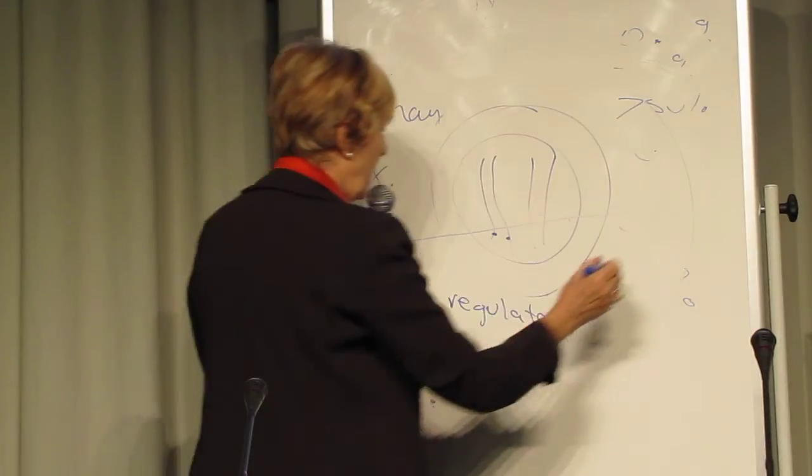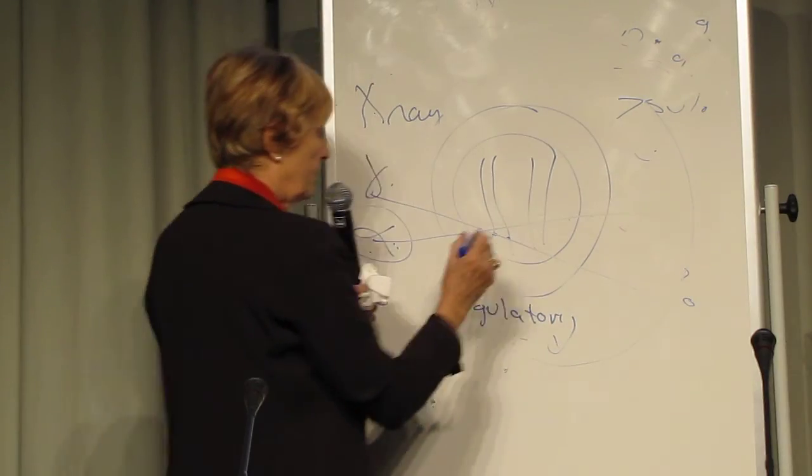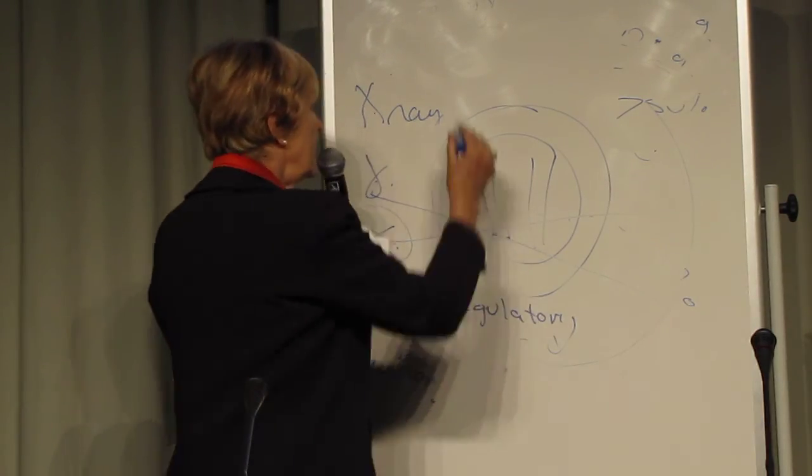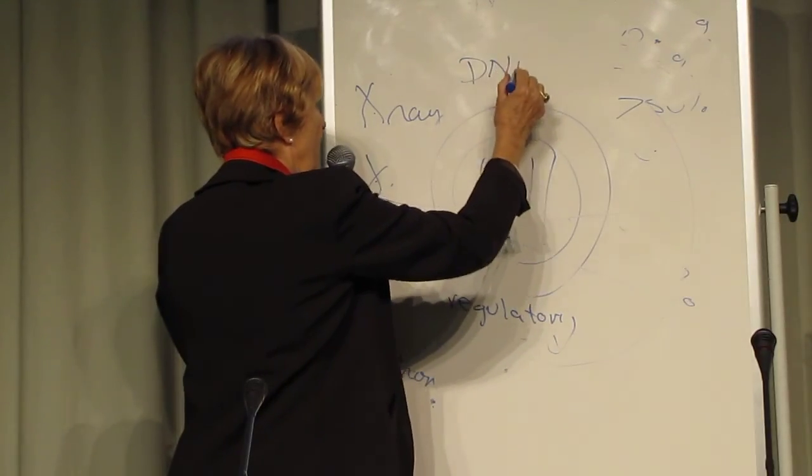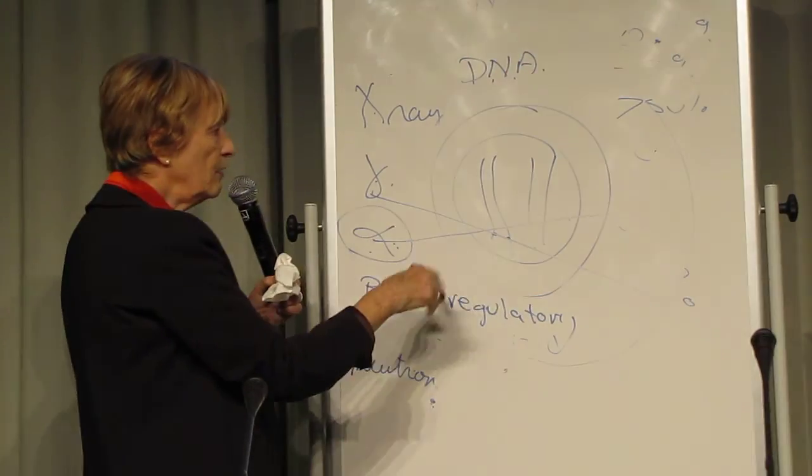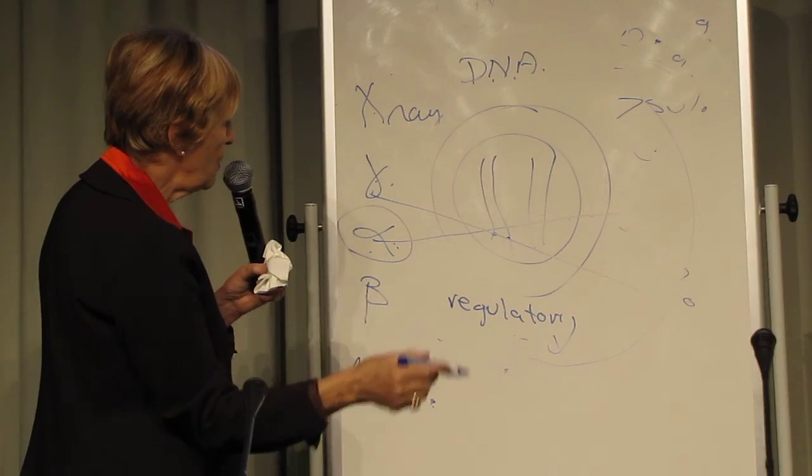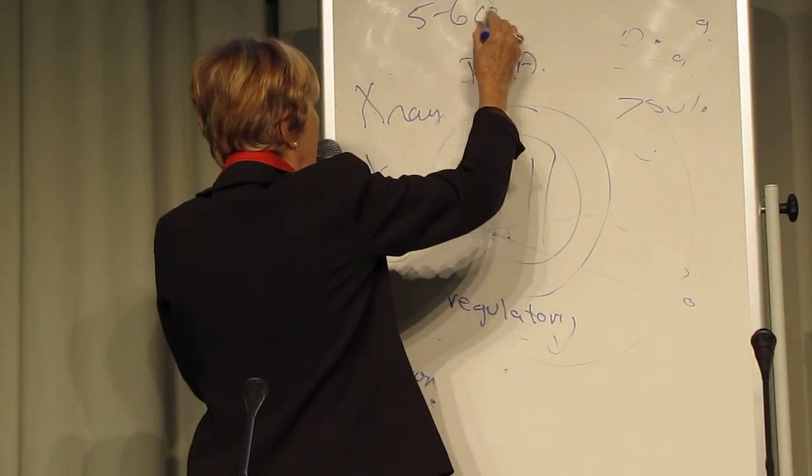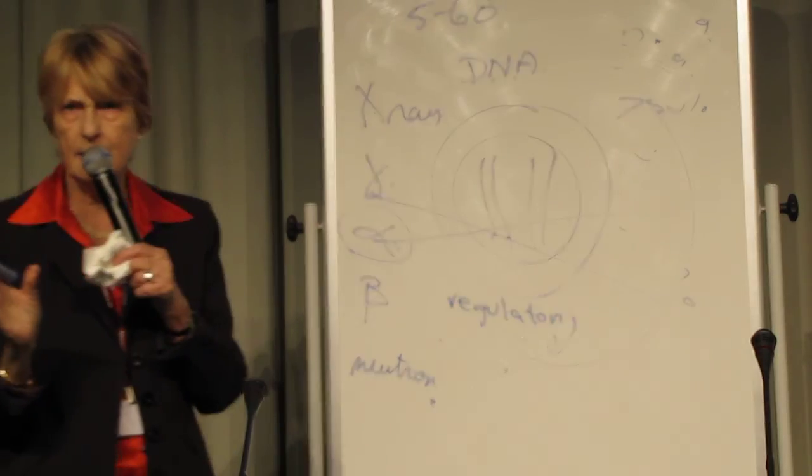If one of them is hit by an alpha particle in a random way, or X-ray or gamma-ray or beta, the DNA molecule changes biochemically, the cell remains viable and lives on. And then one day, 5 to 60 years later, and that's the incubation time for cancer.